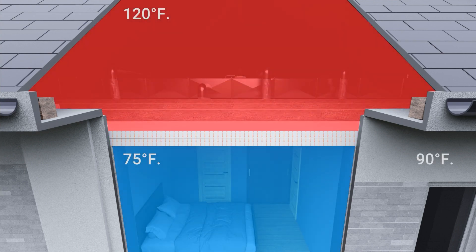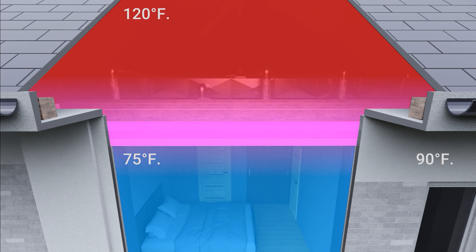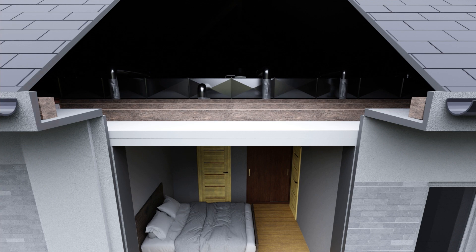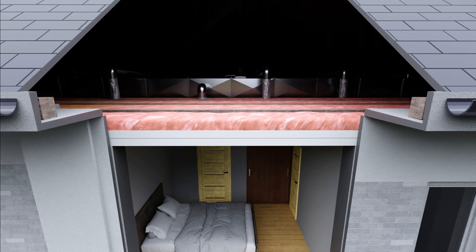The opposite direction of heat flow also occurs. Here we show a hotter attic and a 75 degree Fahrenheit indoor temperature. It is very common here in Florida where we have hot attics with cool indoor temperatures. Insulation helps reduce this rate of transfer.